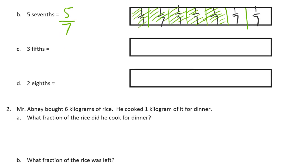Three-fifths. So I'm going to need fifths. A fifth should be a little bit bigger than a seventh, so I'm going to guess that's a fifth. I'll try to make another one about the same size, and the next one about the same as those two, and then one more. Now I have one, two, three — five-fifths. That last one looks a little bit bigger than the others, but that's about as good as I'm going to get them.